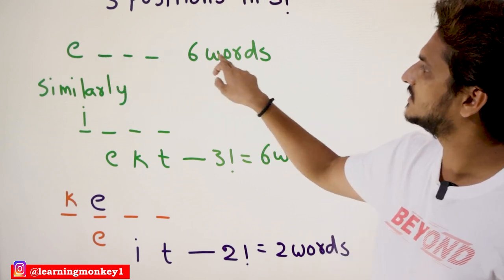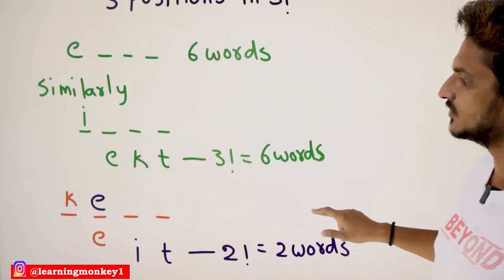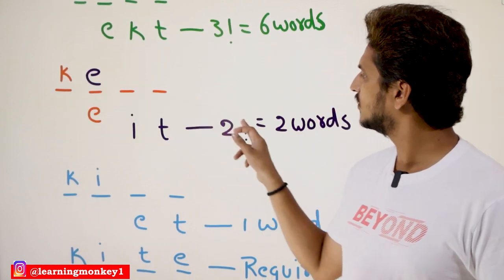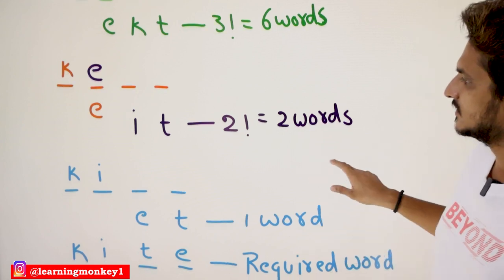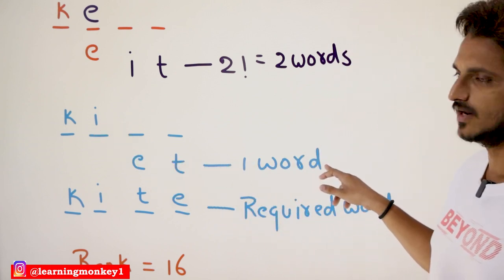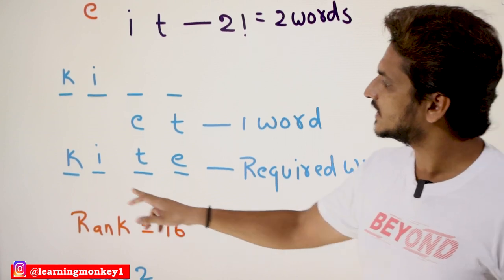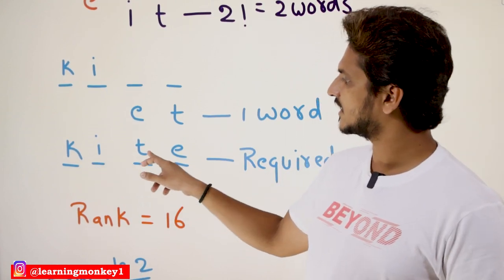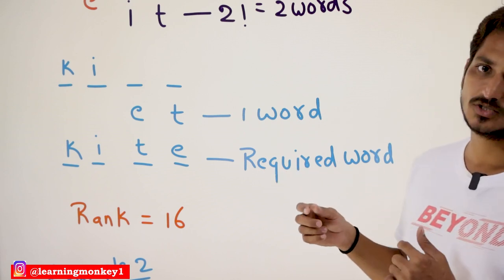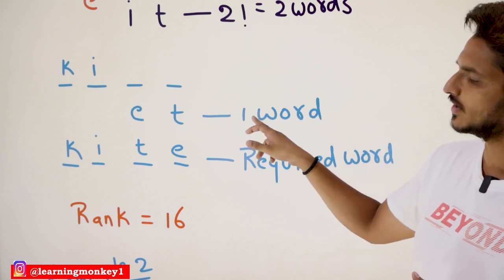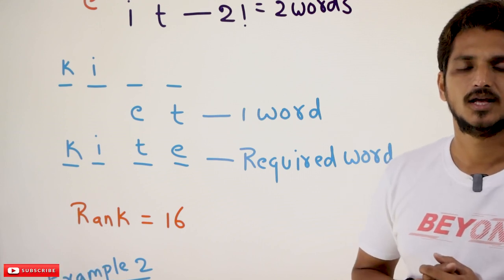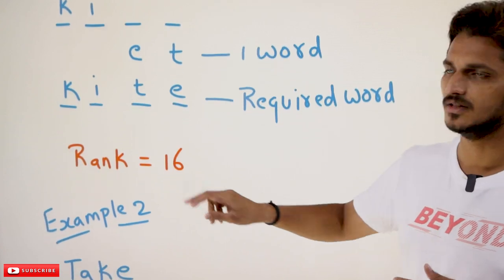So the total count before KITE: starting with E — 6 words; starting with I — 6 words; total 12. Starting with K, second position E — 2 words; total 14. Starting with K, second position I, third position E — 1 word; total 15. Therefore the required word KITE is the 16th word, so the rank of the word is 16.